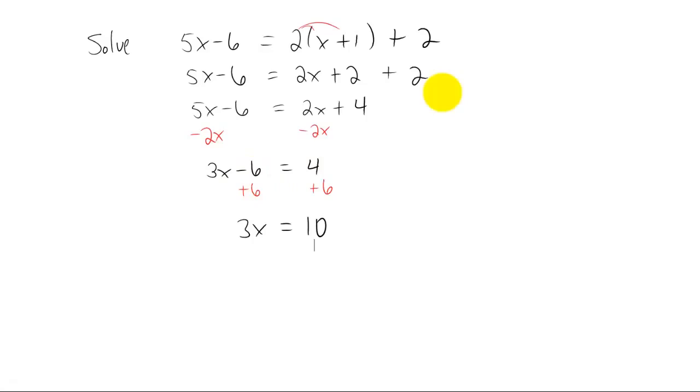The third step on our list was to isolate the variable by dividing. There's a 3 multiplying this x, so we have to divide by 3 on both sides of course. And we've got an x by itself, and in this case, the answer is a fraction: 10 thirds.